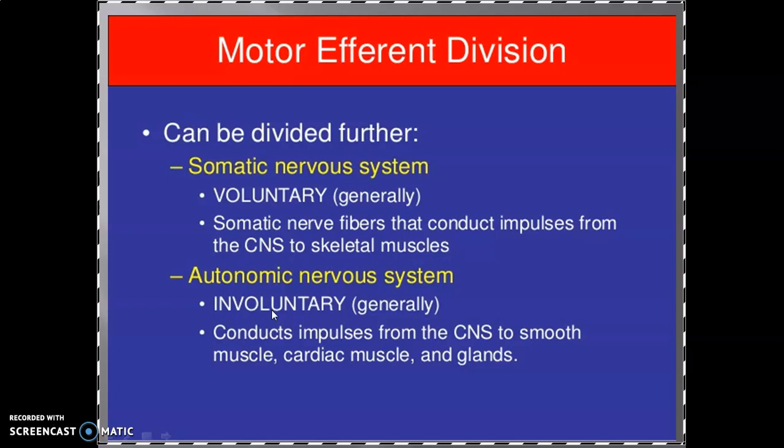As we are discussing the nervous system, we have already discussed the central nervous system and the peripheral nervous system. The central nervous system consists of the brain and spinal cord. The peripheral nervous system includes the somatic nervous system and the autonomic nervous system. The somatic nervous system is responsible for voluntary actions — somatic nerve fibers conduct impulses from the central nervous system to the skeletal muscles.